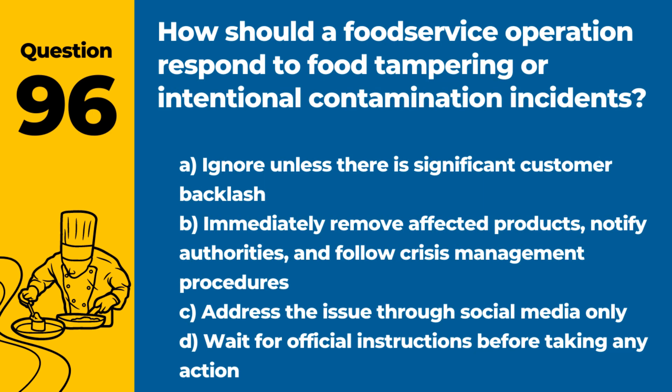Question 96. How should a food service operation respond to food tampering or intentional contamination incidents? Answer: B. Immediately remove affected products, notify authorities, and follow crisis management procedures. Prompt action is essential to ensure public safety and trust.